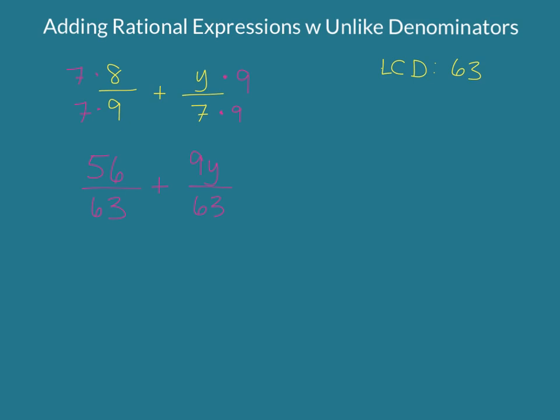Then when you have common denominators, which we do now, we can just add them together. So it's one fraction with a denominator of 63, since they're common, and we'll have 56 plus 9y. Now we want to see if we can factor the numerator at all, meaning is there a GCF between 56 and 9, and there's not. So this is actually our final answer right here.